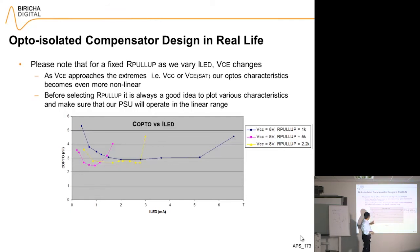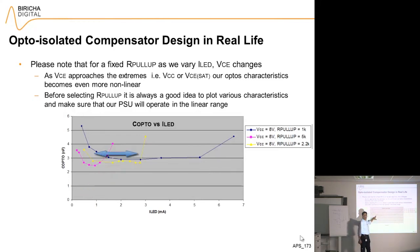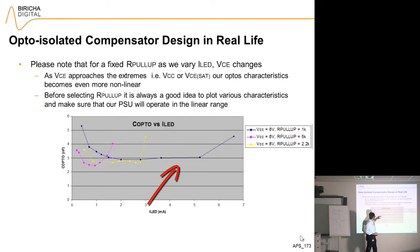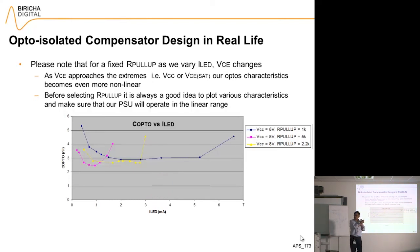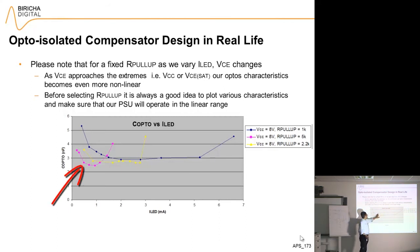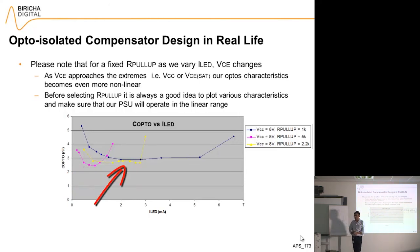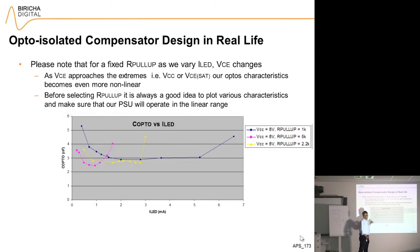A compromise in the middle: if I use 2.2k, you will see from about 1 milliamp to 2.8 milliamps it is very nice, linear, and constant. A compromise needs to be reached — 1k gives you a massive range but uses a lot of current and also loses more phase. 5k gives you very nonlinear behavior. So a nice compromise for me for this particular opto is 2.2k, which gives a good balance between phase loss, current consumption, and linearity.